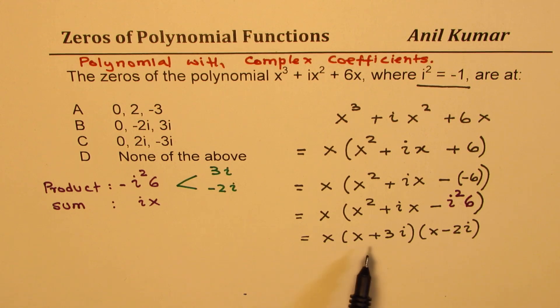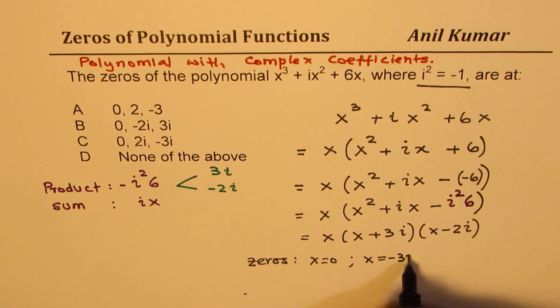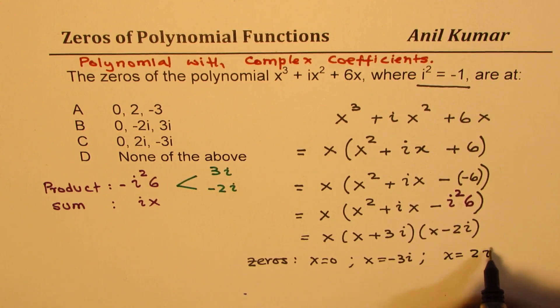Once we have factored, now we know the zeros. One zero is of course at x = 0. The other one here will be at x = -3i, and the third one is at x = 2i. So option C is the correct option.